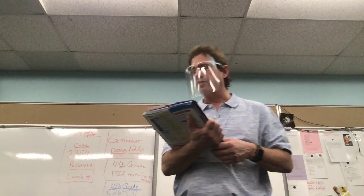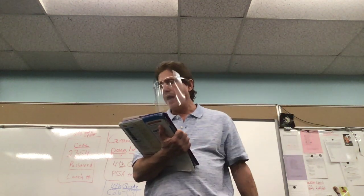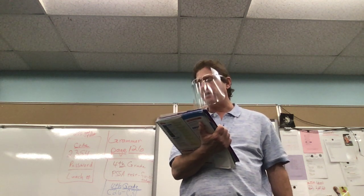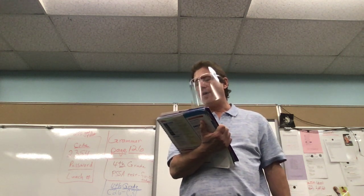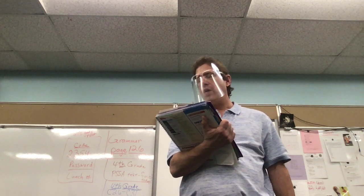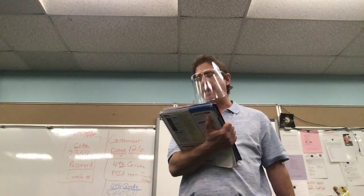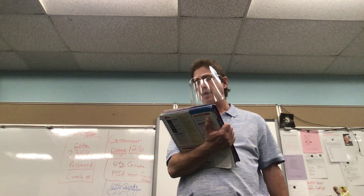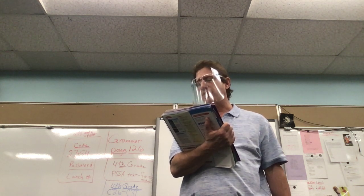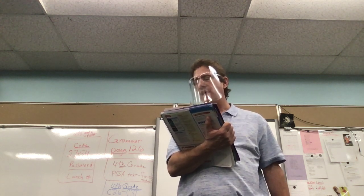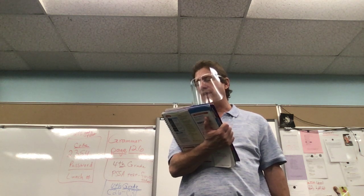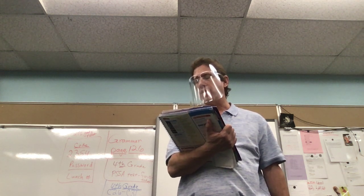Topsoil is the top layer of soil. This rich topsoil in the picture contains a lot of humus. The particles or pieces that make up topsoil are dark and small; plants grow best in topsoil. Subsoil is the bottom layer of soil — it contains little humus, and the soil particles are larger and lighter in color than in topsoil.